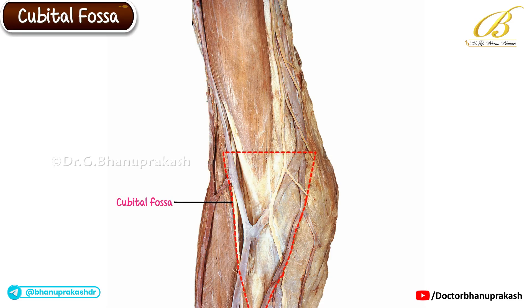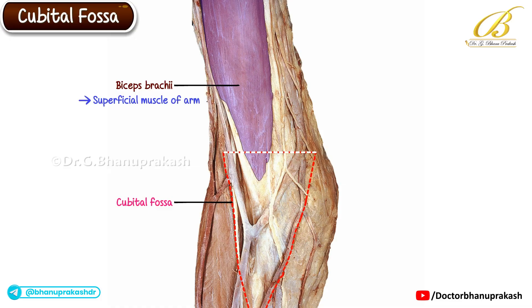Let's orient ourselves by identifying its boundaries: superior, inferior, medial, and lateral. We can recognize the superior end by locating the biceps brachii, a superficial muscle of the arm.